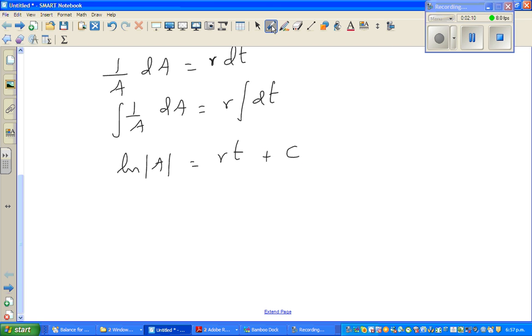Okay. Now natural log has a base of e, so if you write this as a power form I can write |A| = e^(rt + C).